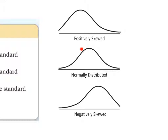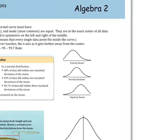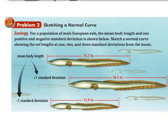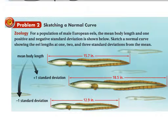In this class, we're going to only deal with a standard normal distribution. Let's take a look at our first example. We want to sketch a normal curve — in fact, the curve is already given and you just need to put in data for it. Zoology: for a population of male European eels, the mean body length and one positive and one negative standard deviation is shown. Sketch the normal curve showing the eel lengths at one, two, and three standard deviations from the mean.